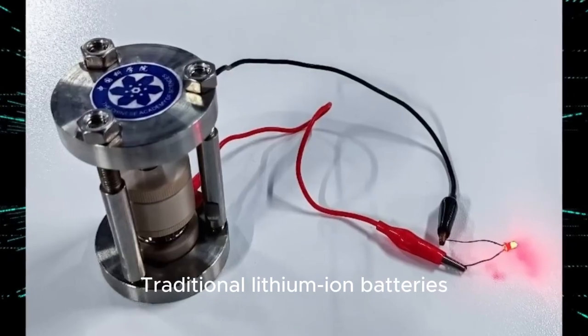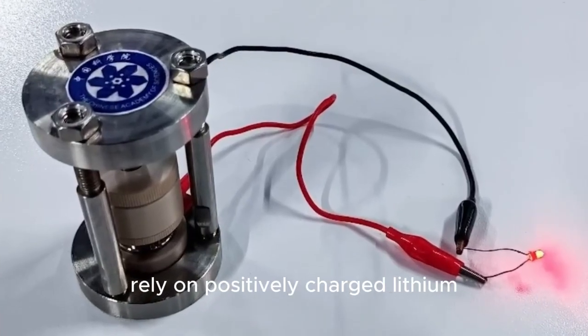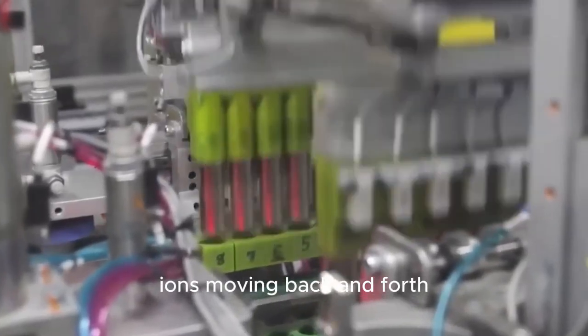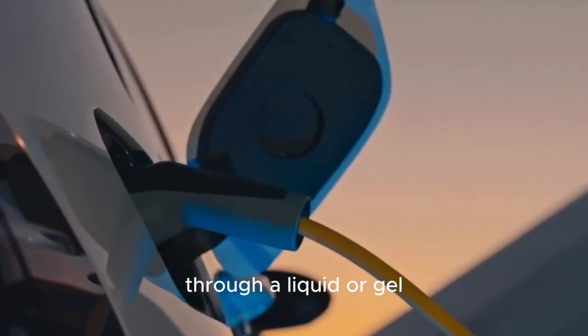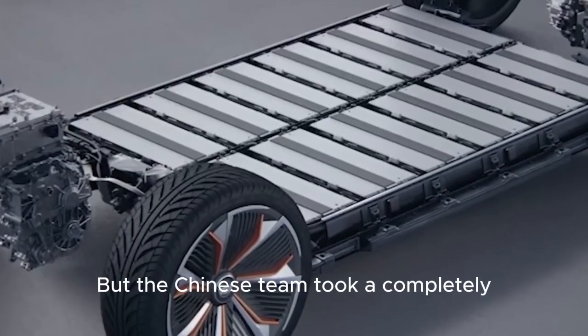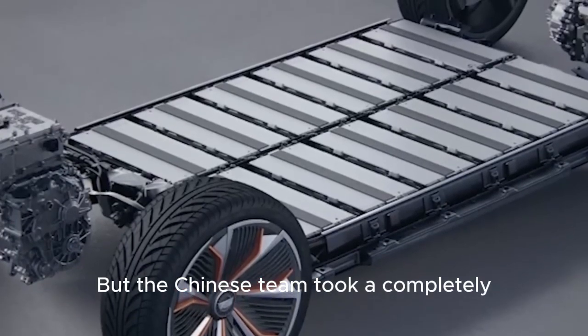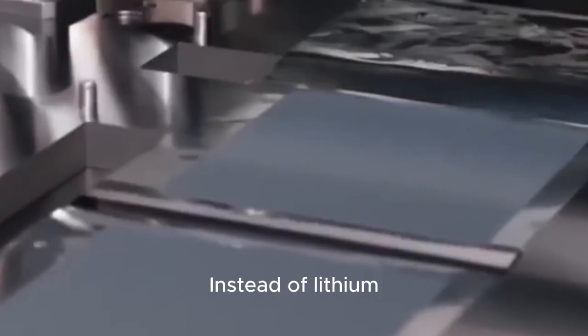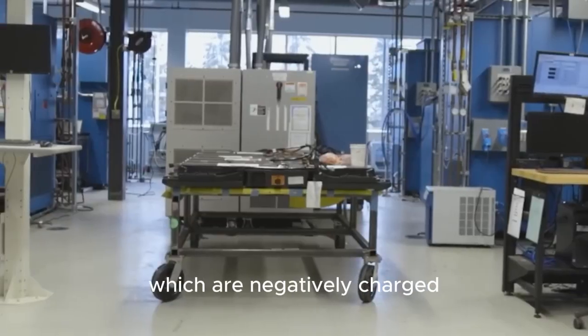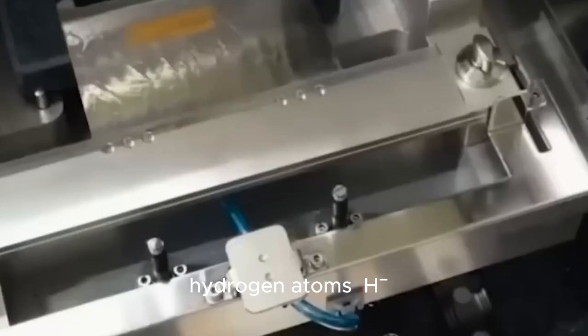Traditional lithium-ion batteries rely on positively charged lithium ions moving back and forth between electrodes through a liquid or gel electrolyte. But the Chinese team took a completely different approach. Instead of lithium, they used hydride ions, which are negatively charged hydrogen atoms, H-.